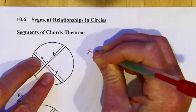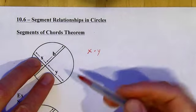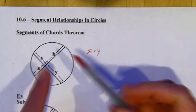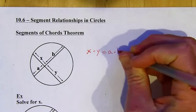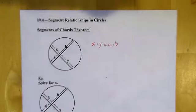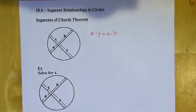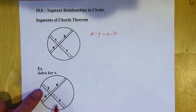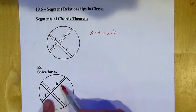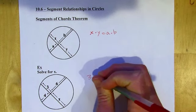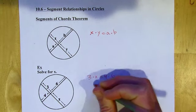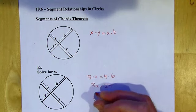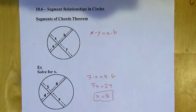If you take the product of X and Y — the segments of one chord — it's going to equal the product of the segments of the other chord. Let's try that with numbers. 3 times X is going to equal 4 times 6. So 3X equals 24, divide by 3, and X equals 8.